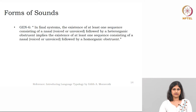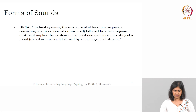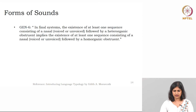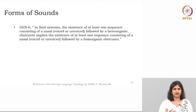What is the next generalization? The sixth generalization says: in final systems, the existence of at least one sequence consisting of a nasal — whether voiced or unvoiced — followed by a heteroorganic obstruent implies the existence of at least one sequence consisting of a nasal followed by a homoorganic obstruent. These are heavily loaded phonological terms, but let us simplify.